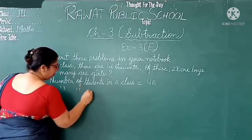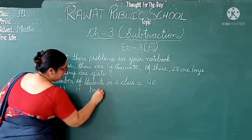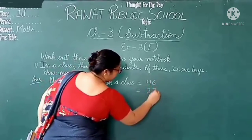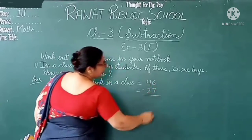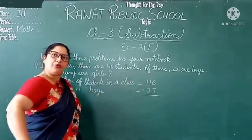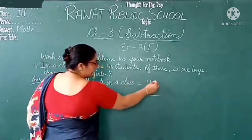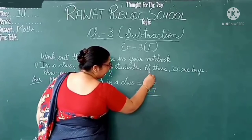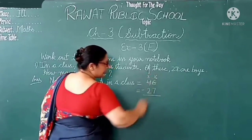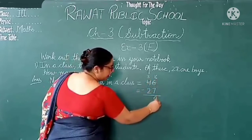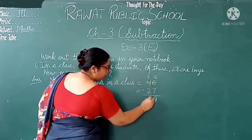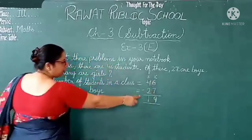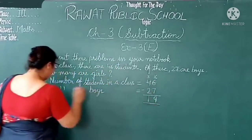Number of boys is equal to 27. So we subtract 27 from 46. 6 is smaller than 7, so we take a carry from 4. Here it is 3 and 6 becomes 16. So 16 minus 7 is equal to 9. And 3 minus 2 is equal to 1. So number of girls in the class is equal to 19.